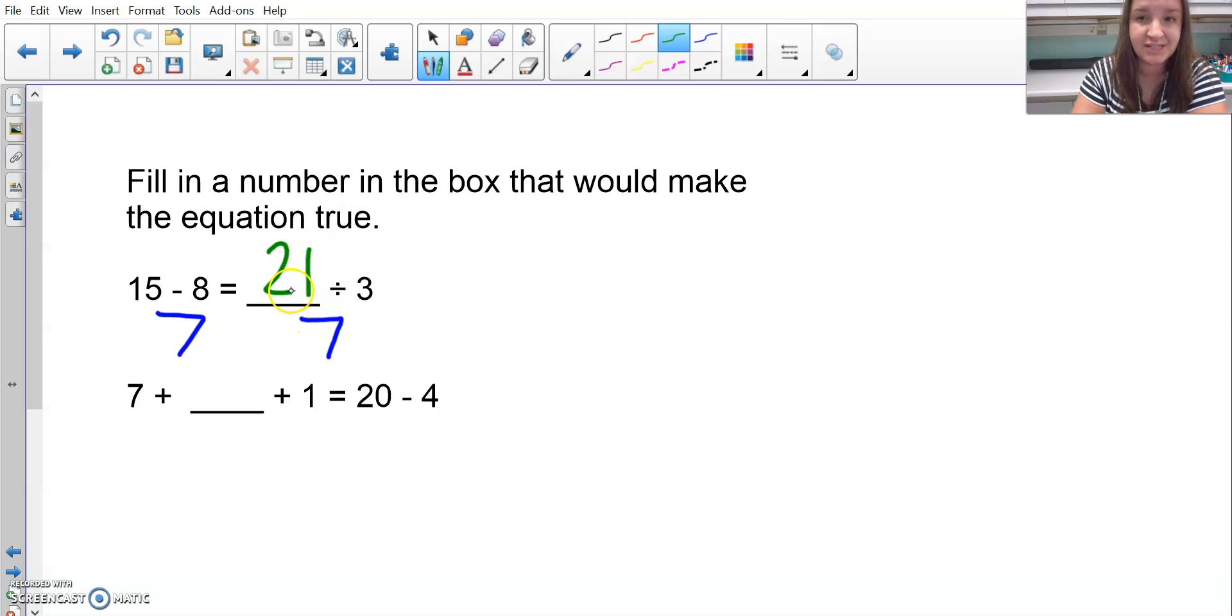So 21 is the number that goes in the blank because that's a way to make this expression equivalent to this expression over here. 15 minus 8 is 7, and 21 divided by 3 is 7. You want them to both equal the same thing.